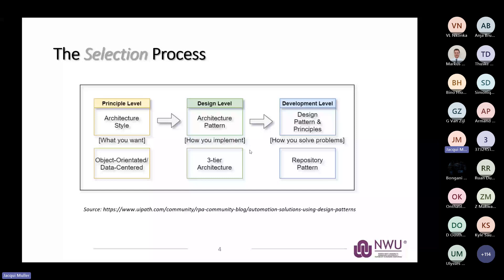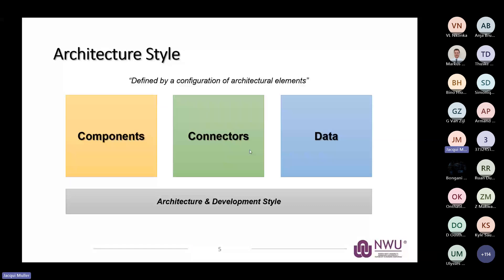If you select a three-tier architecture, in this case using MVC with .NET Core — where you've developed an API using MVC — the repository pattern is what you apply on top of that MVC pattern to ensure maximum reusability. This ties your entire style and architecture selection together from an implementation perspective. When we talk about architecture, we look at components, connectors, and data, and configure all these elements within our environment to define how we want to go forward.